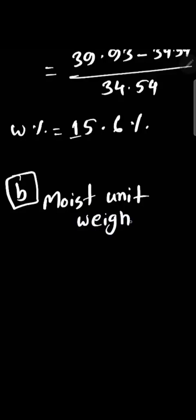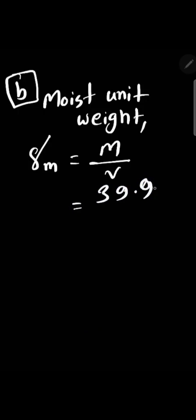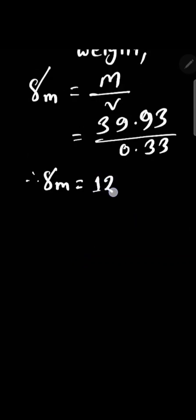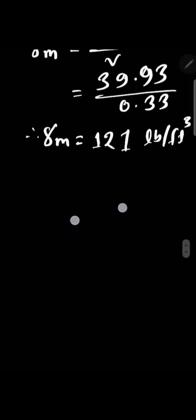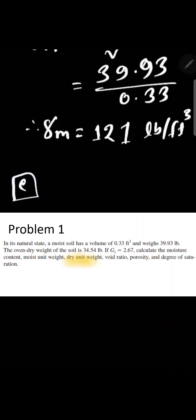The second question is to calculate the moist unit weight. Moist unit weight equals total mass over volume — 39.93 divided by 0.33 — and the moist unit weight will be 121 pounds per cubic foot.